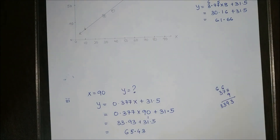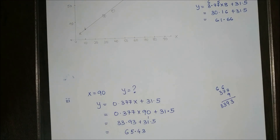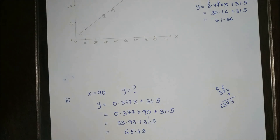We can also predict the value at x = 90 even though it was not in our original data. This is the use of regression — we can predict and estimate values for new inputs.